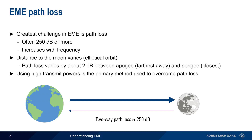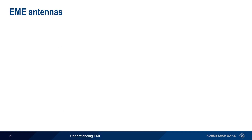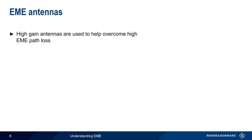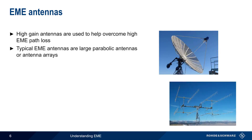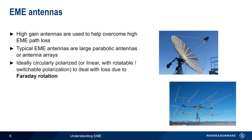Using high transmit power is the primary method used to overcome this high path loss in EME. In addition to high transmit powers, high gain antennas are another way of overcoming path loss. EME antennas are usually either large parabolic antennas or arrays of antennas. Ideally, antennas used for EME should have circular polarization, or switchable polarization, in order to deal with losses due to Faraday rotation. We'll come back to this topic later in the presentation.